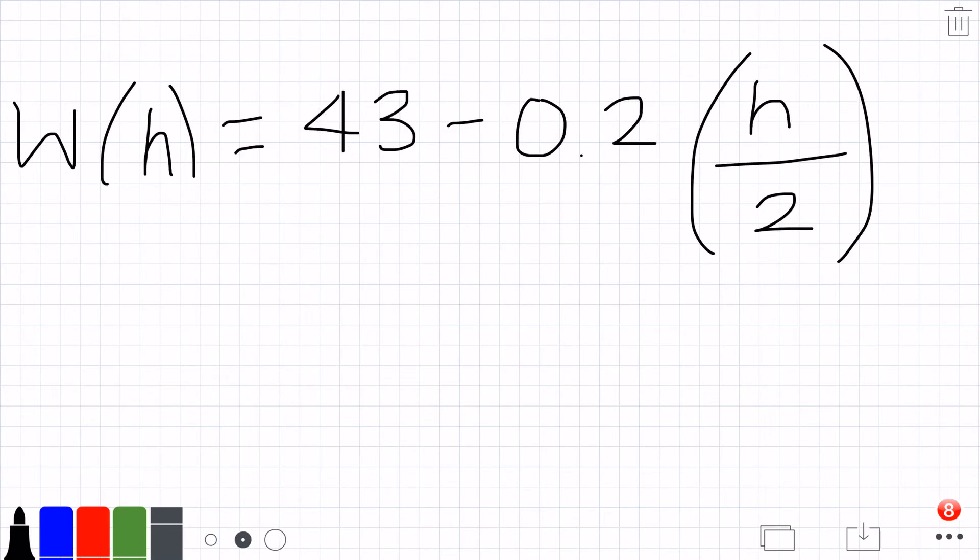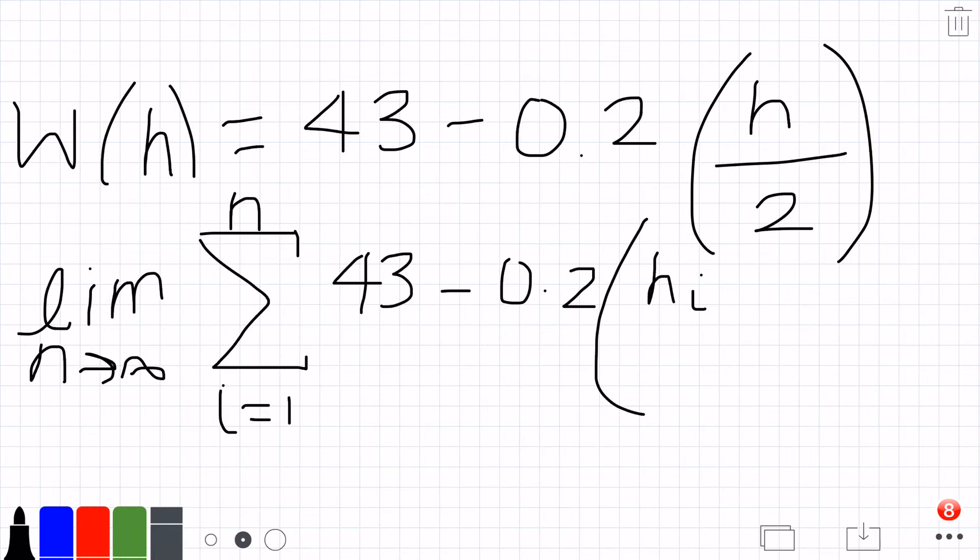If we were to approximate the work using a Riemann sum, we would use the limit as n approaches infinity of the sum from 1 to n of 43 minus 0.2 h sub i over 2 delta h.